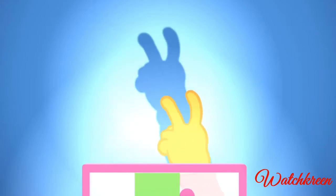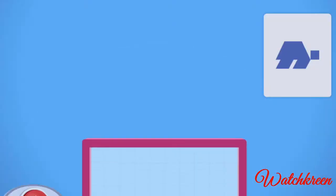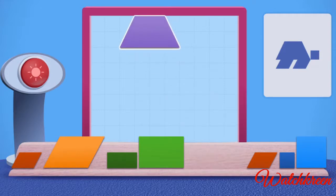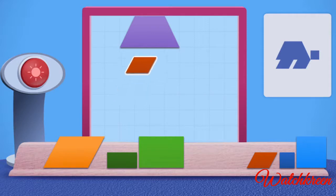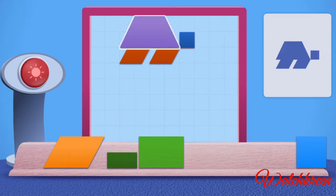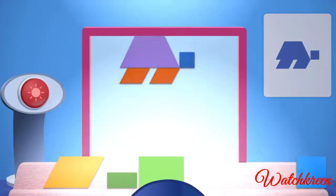Here's another one. Look at the bunny hopping around the room. Great job! You used a trapezoid, a square, and two parallelograms to block the light and make a shadow.